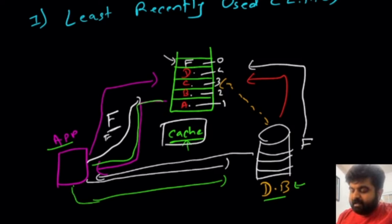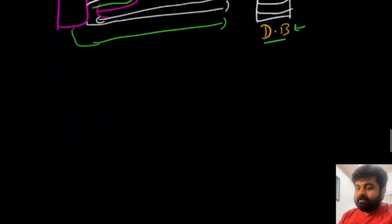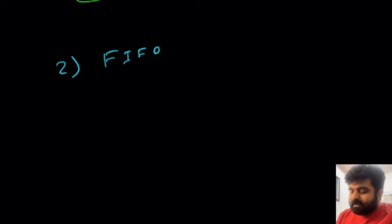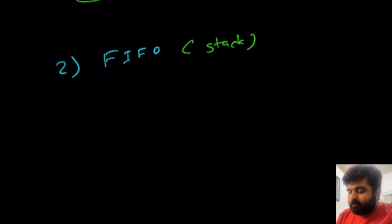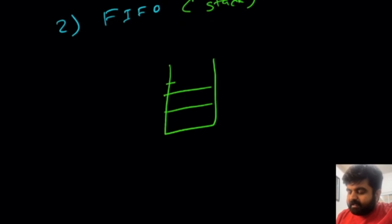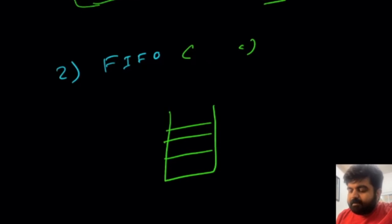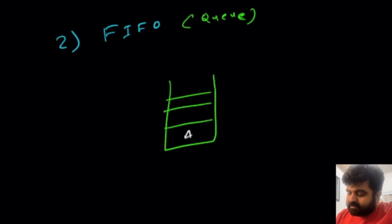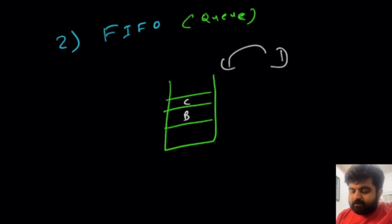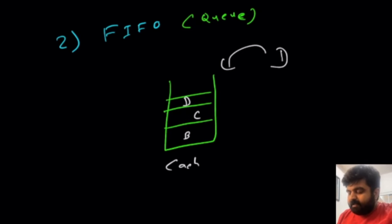That is the Least Recently Used policy. Now very similar to that is our second caching policy — FIFO, or First In First Out. This concept is like a queue. We keep track of all the values that came in and in what sequence, and we remove values in that same sequence. So if we first entered value A, then B, then C, and now we want to enter a new value D, we remove value A because it was the first value that came into the cache. Then we add value D. This is a very simple strategy for maintaining values inside the cache.